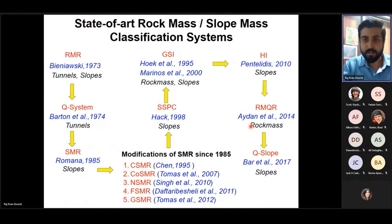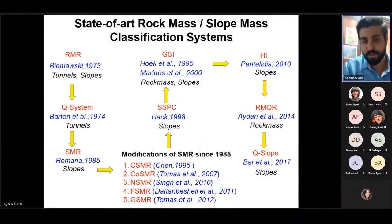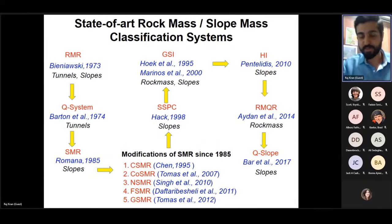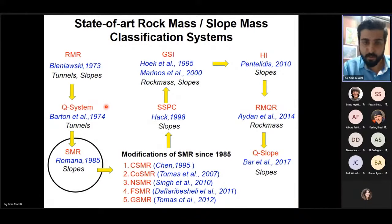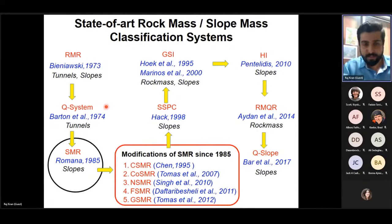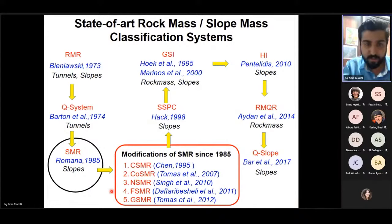There are well-known empirical classification systems used worldwide in geotechnical and engineering geological investigations: RMR, Q-system, GSI, HI, SMR, and the currently developed Q-slope. My primary goal is to discuss the Slope Mass Rating (SMR) classification system and its modifications: Chinese SMR (CSMR), Continuous SMR, New SMR, Fuzzy SMR, and Graphical SMR.